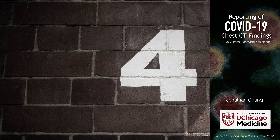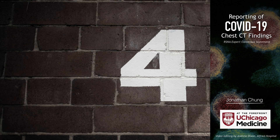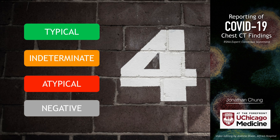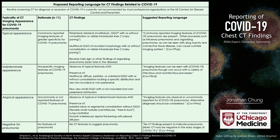This is a four-tier system: typical, indeterminate, atypical, and negative for pneumonia. I do my best to adhere to this framework on CT in patients who are suspected of having COVID-19 infection. I encourage you to go look it up yourself — pretty easy to find. But for the sake of education, we can go through these specific imaging categories to give you an idea of what COVID-19 does look like on imaging.